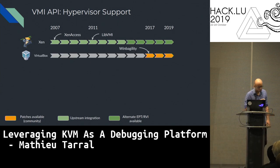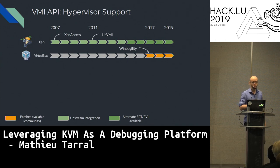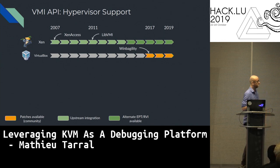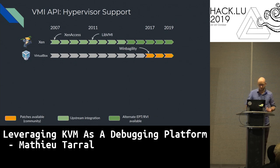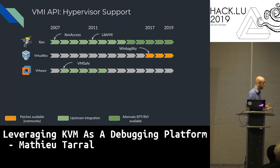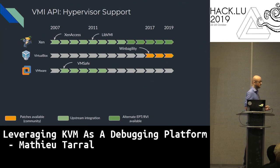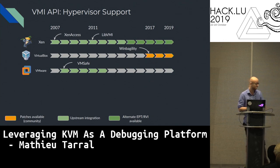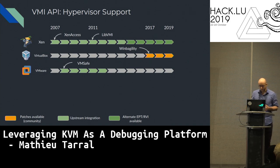If you look at VirtualBox, there are community patches thanks to the WinBagUnity project — orange because it's a community patch, not integrated upstream. You can also mention VMware: they had this VM-safe API, but they deprecated it a few years ago.